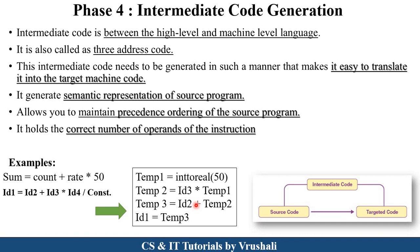Intermediate code generation maintains the precedence order of the source program, executing the code line by line properly. It also holds the correct number of operands for each instruction, ensuring correct operators are used. This intermediate code is easy to translate into machine language or target code.